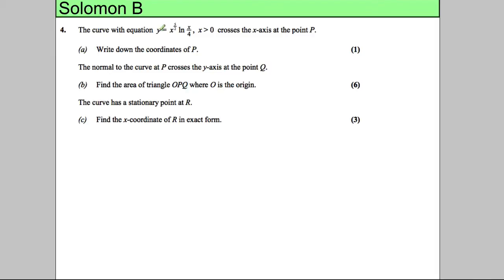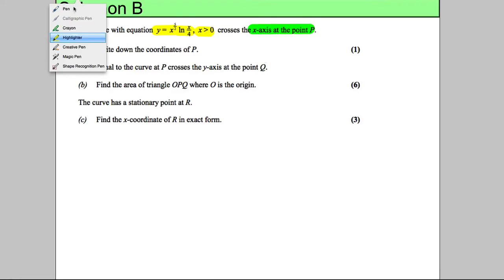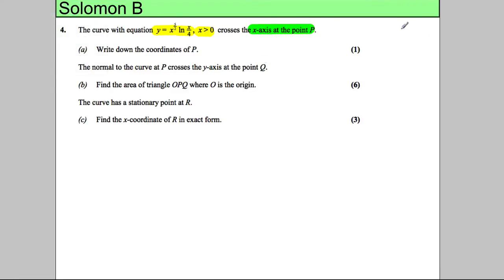We've got a curve with equation y equals x to the power of 5 over 2, multiplied by the natural logarithm of x over 4. x is bigger than 0, we're told, and it crosses the x-axis at point P. Write down the coordinates of point P.